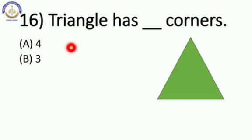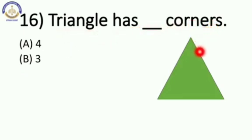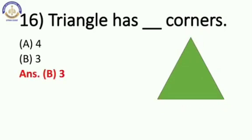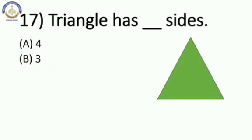Now next: a triangle has blank corners. When two sides meet, that is a corner. So here: 1, 2, and 3 corners. Triangle has 3 corners. Our answer is B, 3.